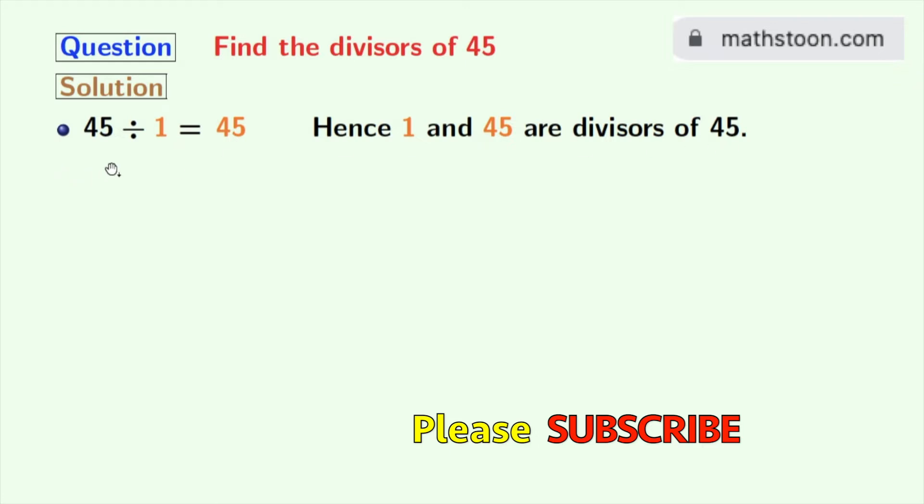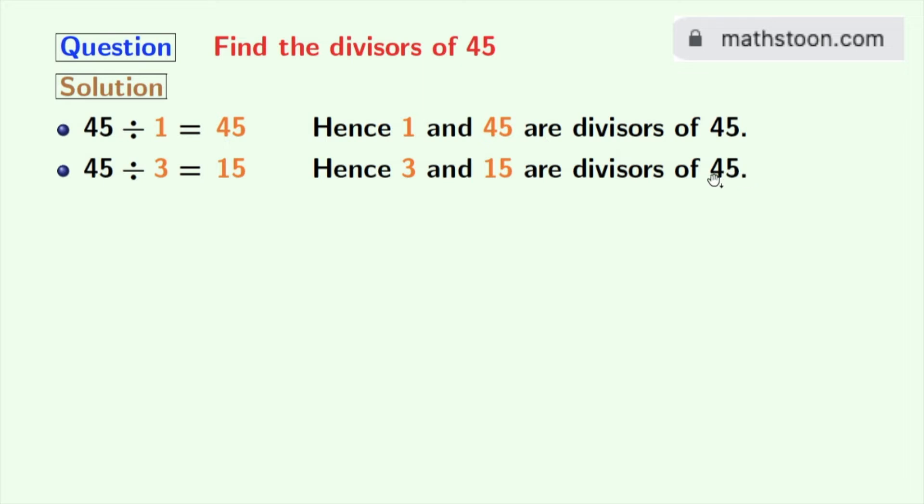Now if we try for 2, we see that 45 is not divisible by 2, so we will move to 3. 45 divided by 3 is equal to 15, so 3 and 15 are the divisors of 45.